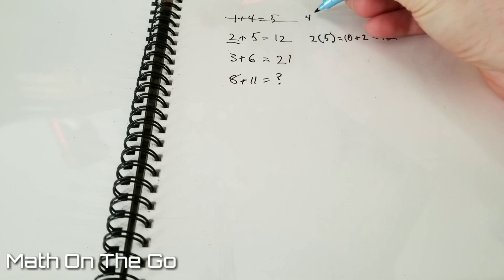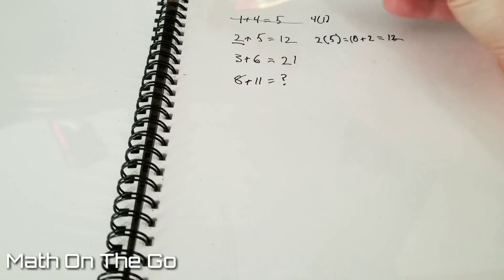Same with this first one. We take 4 times 1, which equals 4, and then we add the first digit, which equals 5.